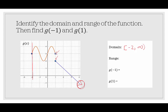For the range, since the graph is going downward with no least point, the range starts at negative infinity. It comes up to 4, which appears to be the highest point and is included, so the range is (−∞, 4]. To find g of negative 1: at x equals negative 1, we go up and find the graph there. When we're at negative 1, the output is 3, so g of negative 1 is 3.